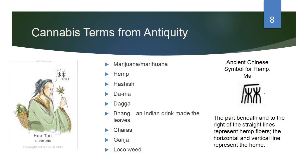Here are some cannabis terms from antiquity that are still fairly well represented: marijuana, hemp, hashish, dama, dagga, and bhang — an Indian drink made from the leaves.